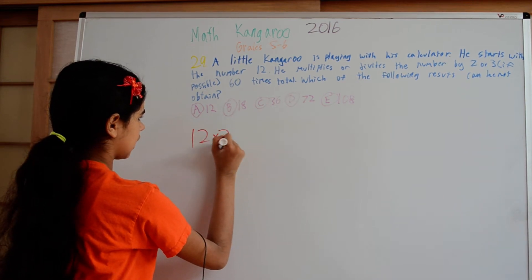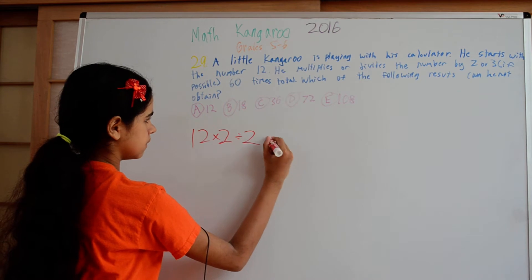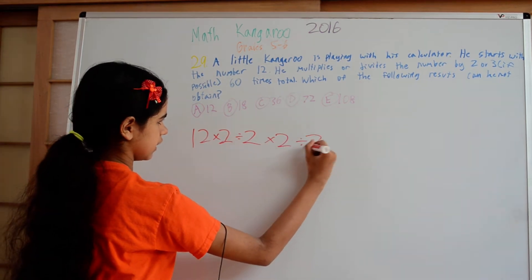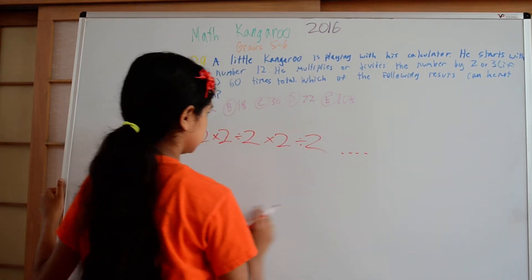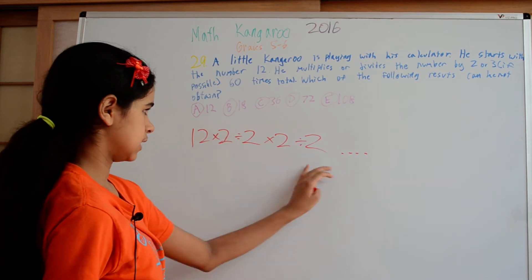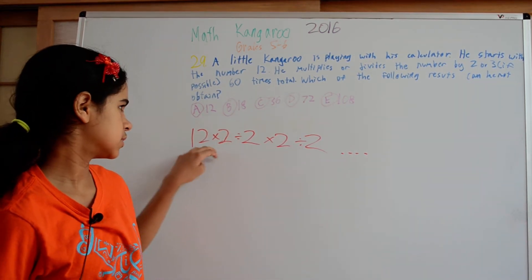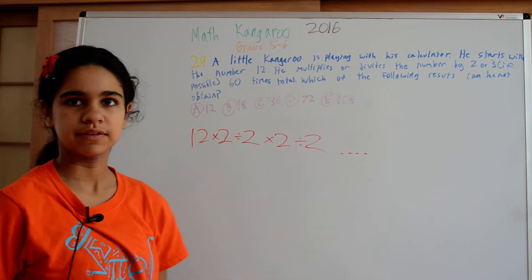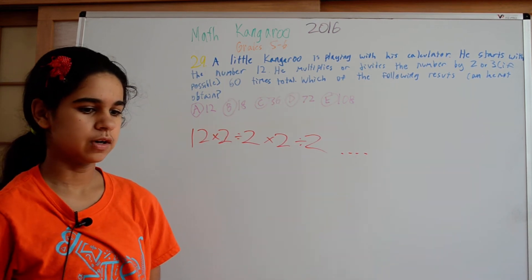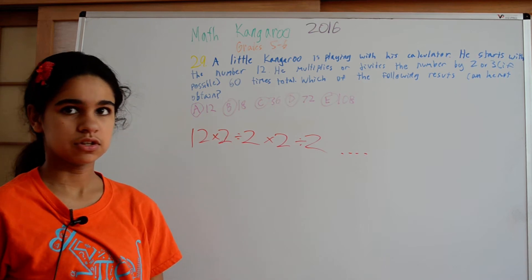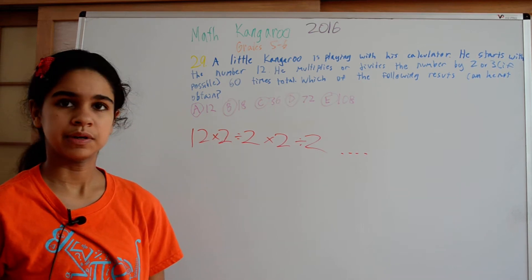12 times 2 divided by 2 times 2 divided by 2 and so on, until we have 60 of these times 2 divided by 2's here, and each of those would just give us times 1 and that would leave us with 12. And 60 is an even number, so there would be 30 times and 30 divided, and so it would even out.